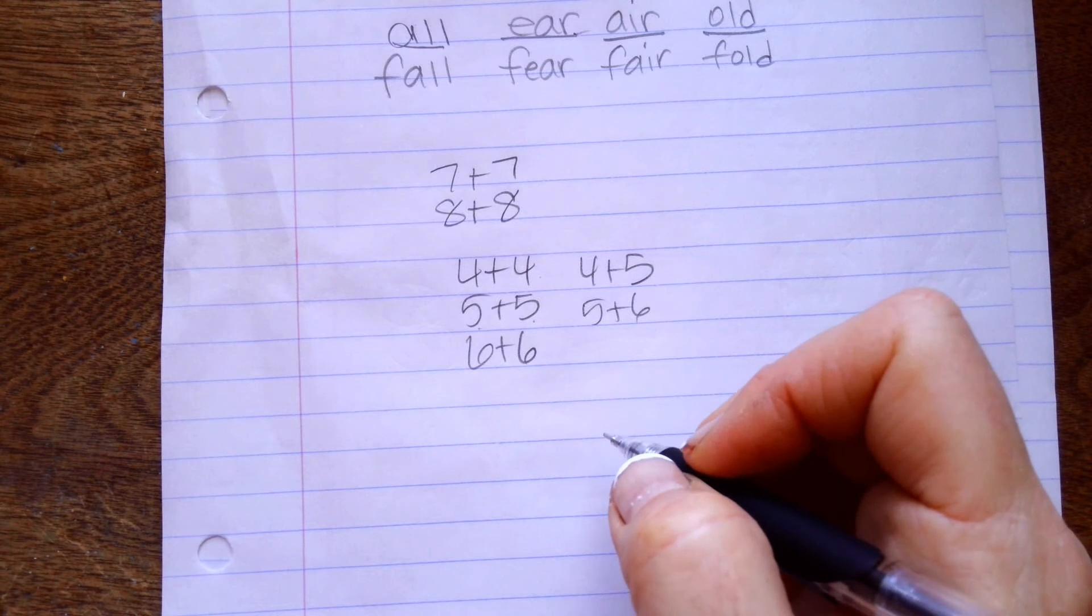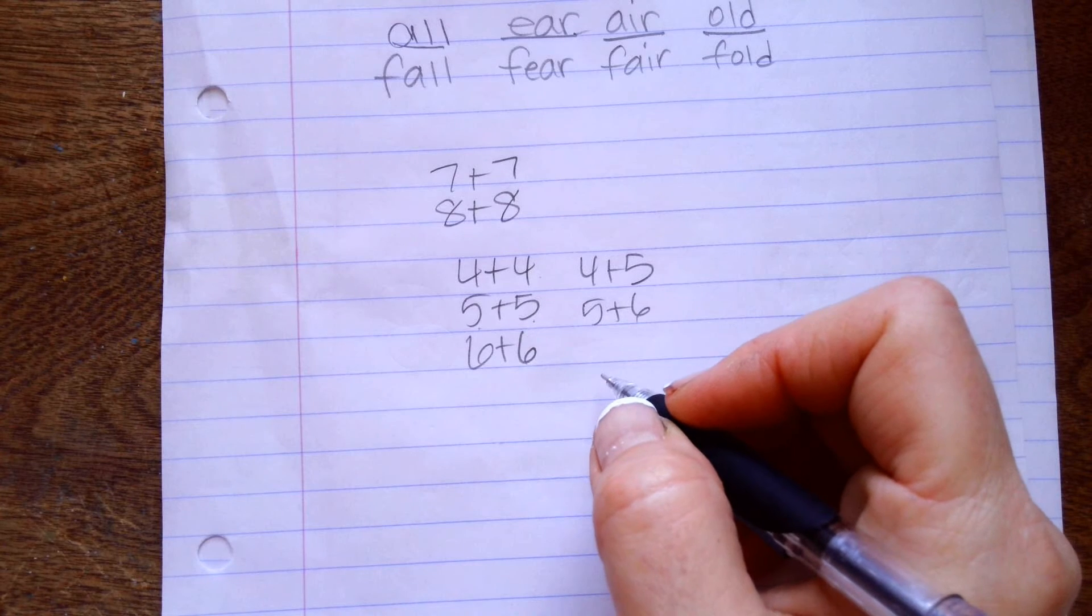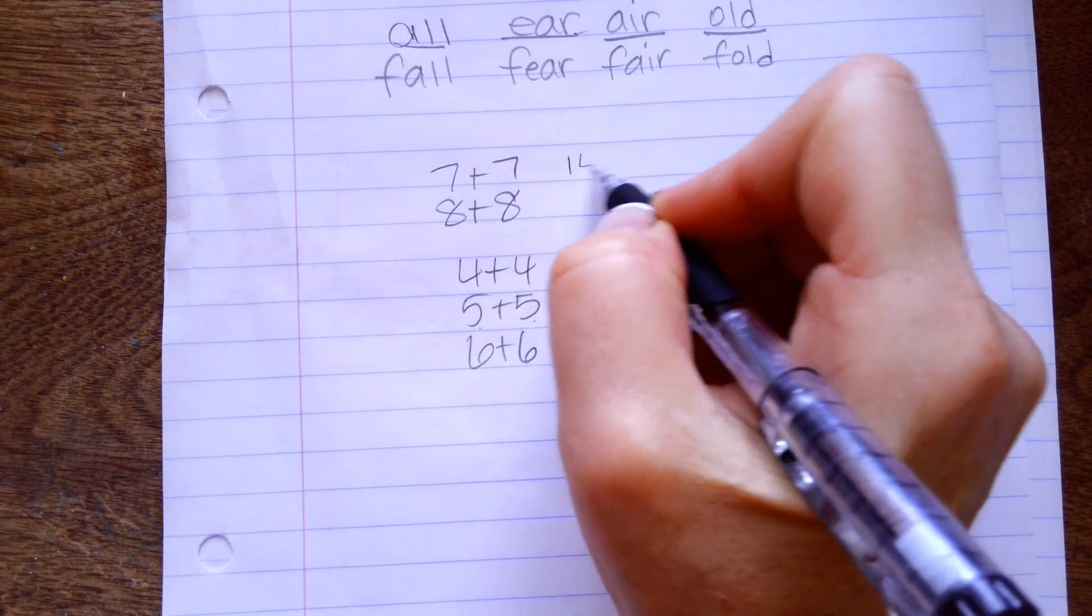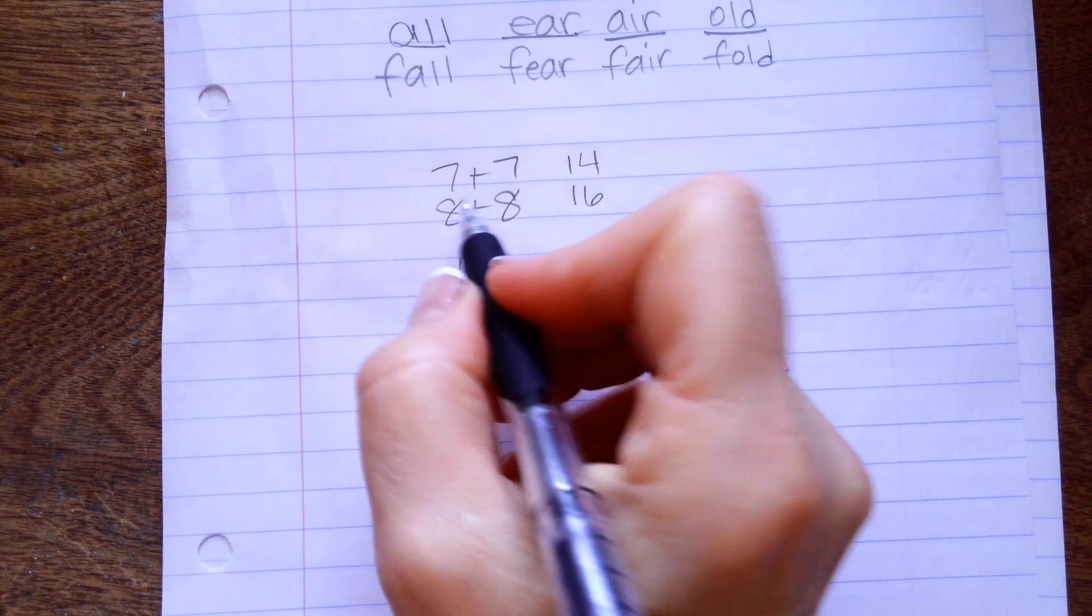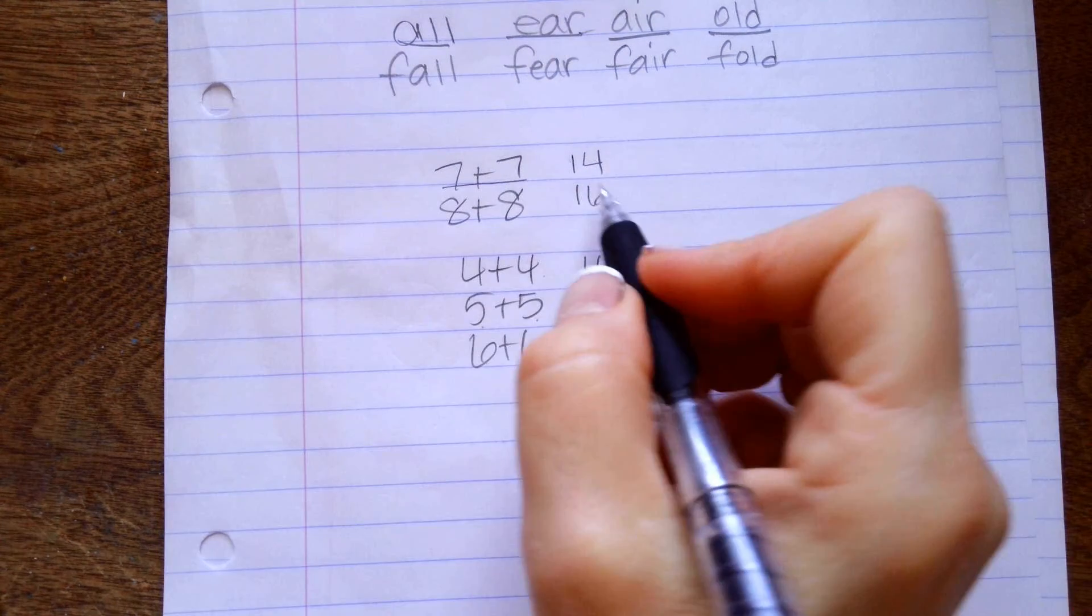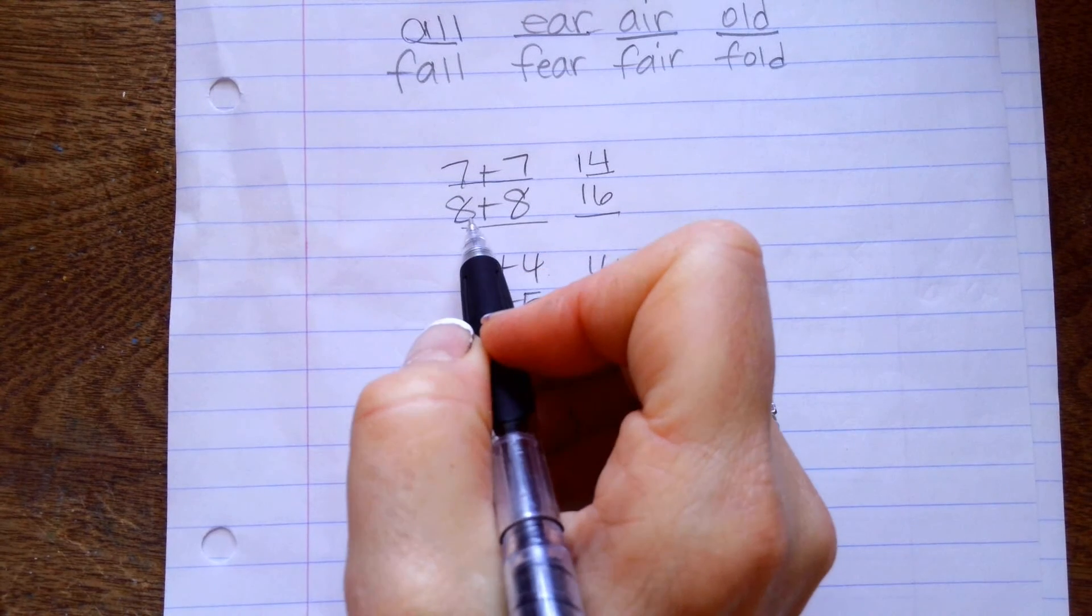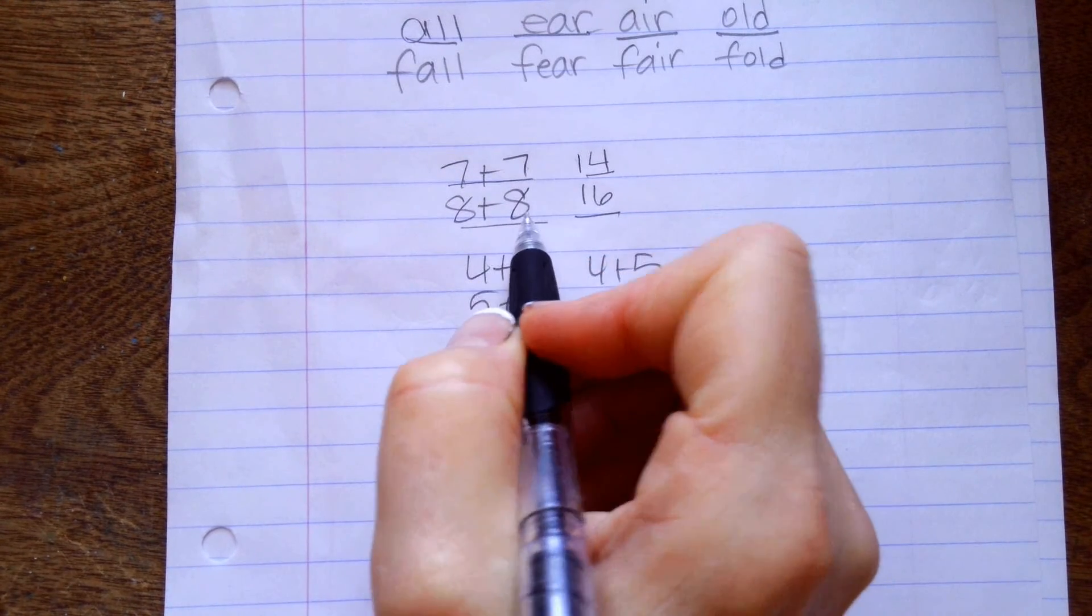It's like 7 plus 7 is higher and then 8 plus 8 is lower. No. So 8 plus 8 is higher. So basically this one is 7 plus 7 is 14 and 8 plus 8 is 16.